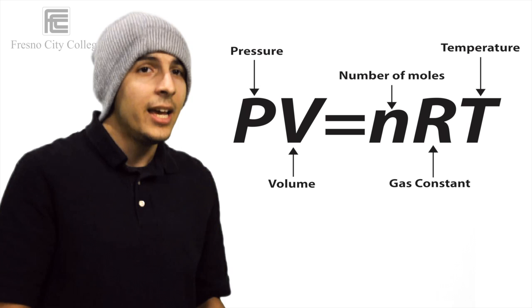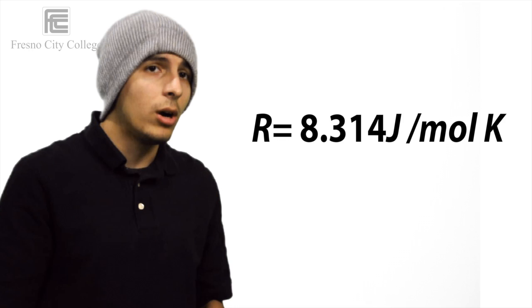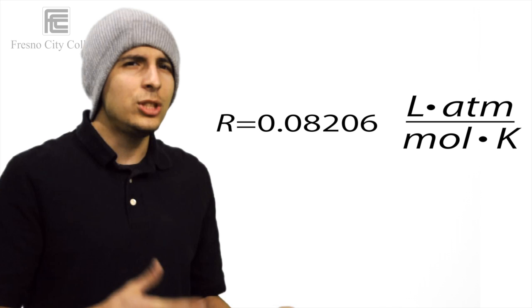R is the ideal or universal gas constant, with the value 8.314 joules per Kelvin mole — which is in units of energy — or 0.08206 liters atmospheres per mole Kelvin, which is most often used for the ideal gas law.